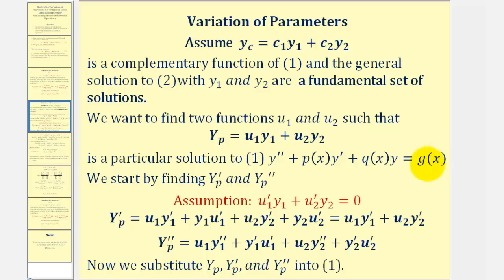What we'll do next is find the first and second derivatives of y_p and then perform substitution into equation one. But before we do this, we are going to make one important assumption: we'll assume that u₁' times y₁ plus u₂' times y₂ is equal to zero. This assumption will simplify our derivatives as well as help us find u₁ and u₂.